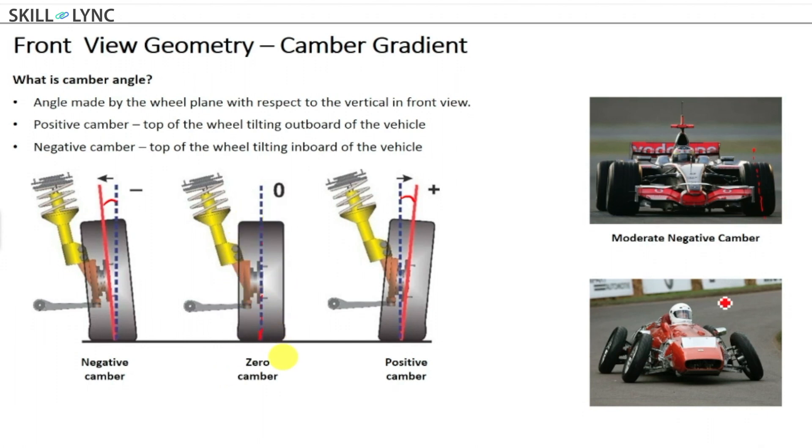So for example here, you can see that I have the tyre and when I'm looking at it from the front view, the wheel plane is exactly perpendicular to the ground plane, right? So that is why this is called as a zero camber.